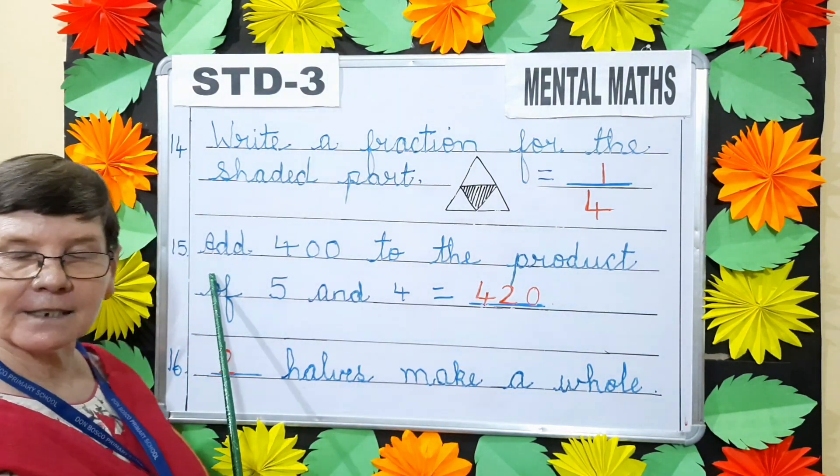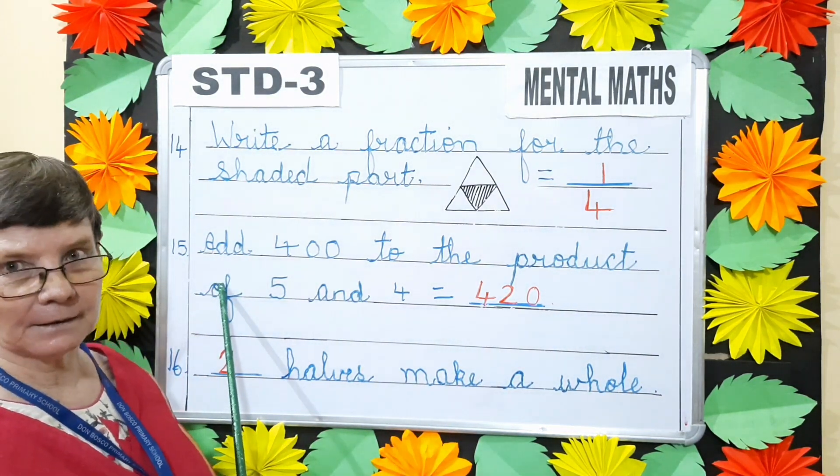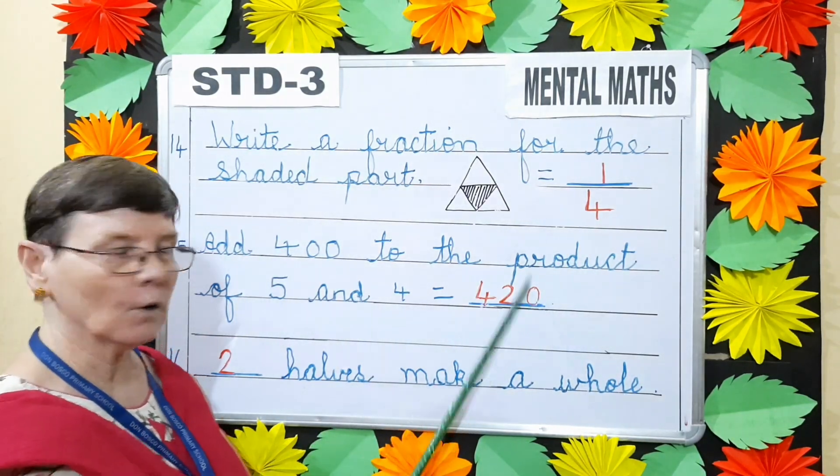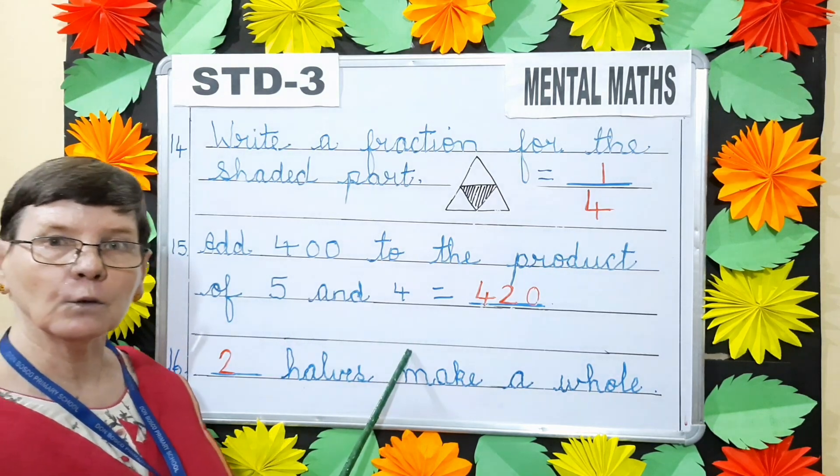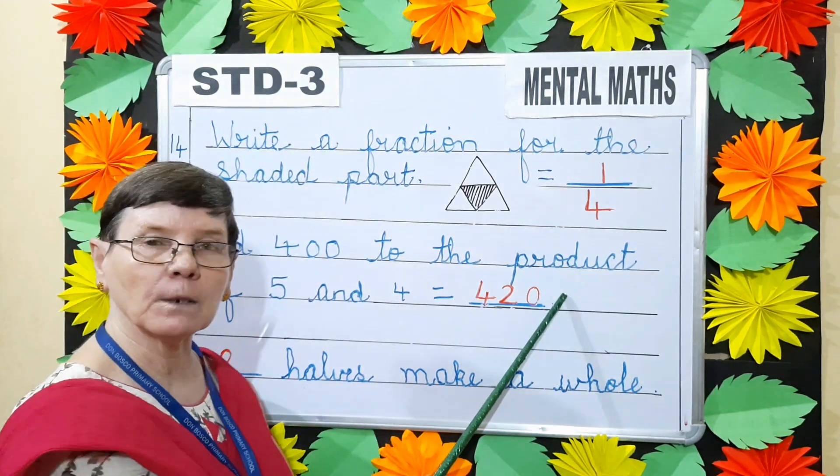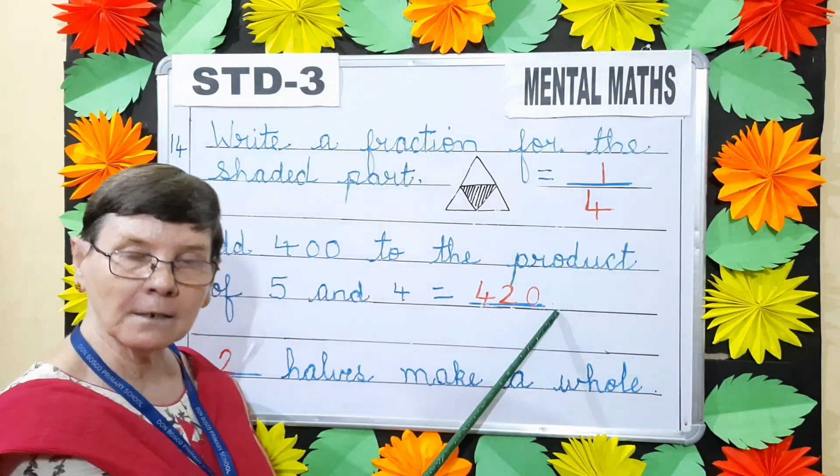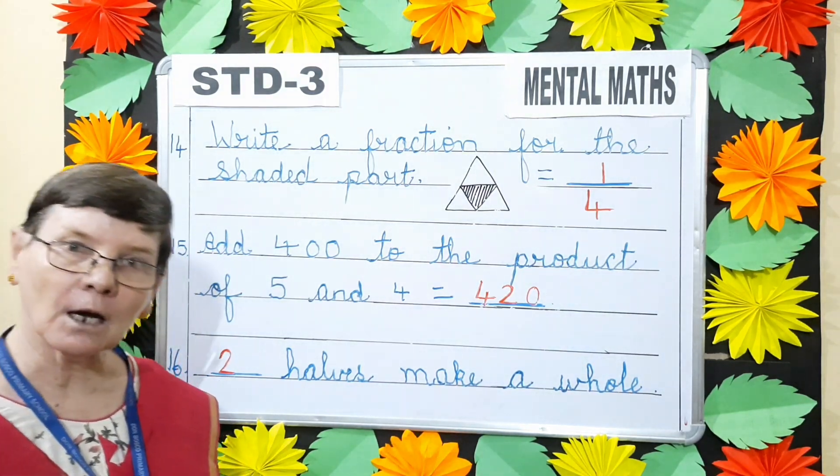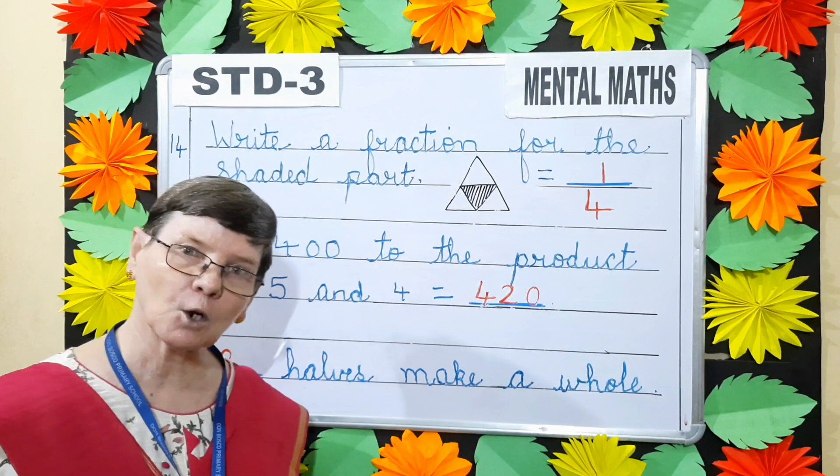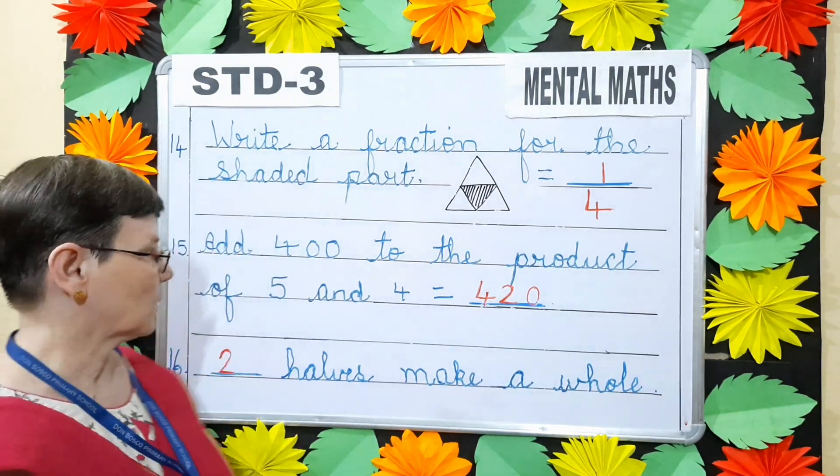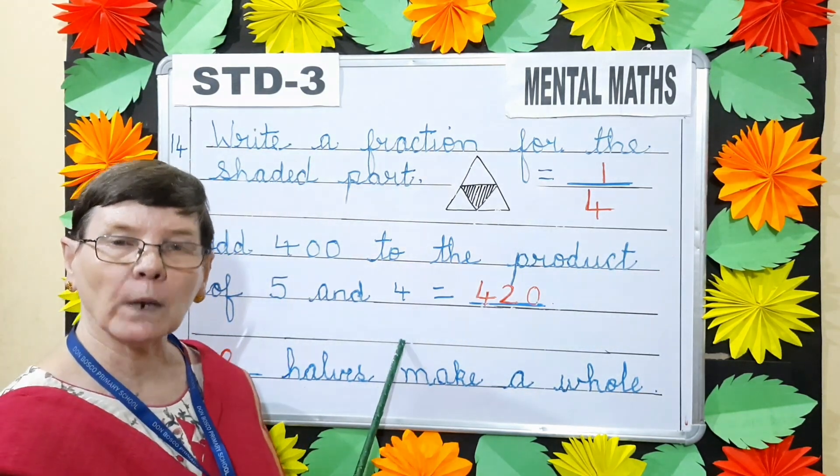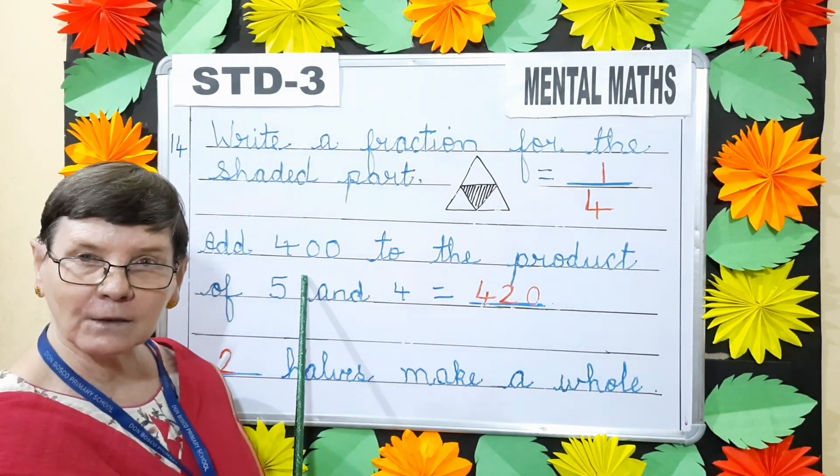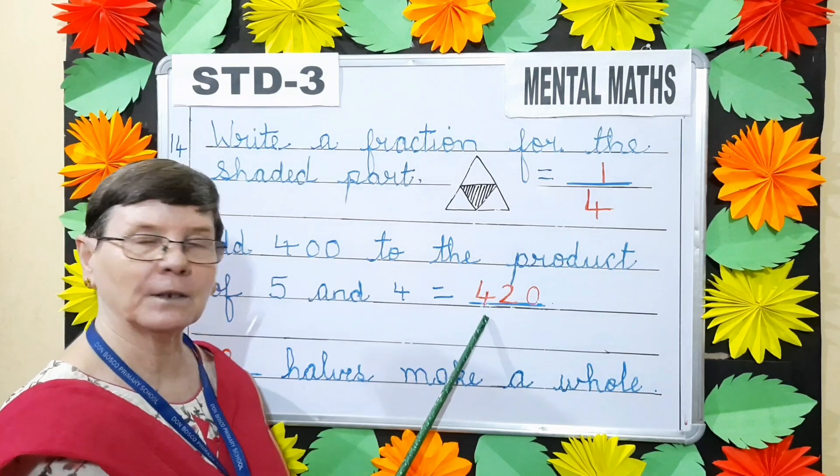Next. Question number 15. Add 400 to the product of 5 and 4. Once again children, product means multiply two numbers together. And the answer in multiplication is called product. So 5 4's are 20. 20 plus 400 will give you 420.